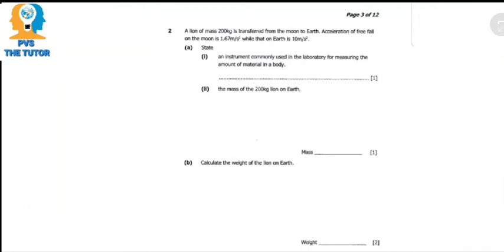Welcome to PVST Tutorial guys. Today I've got a question from a past paper. It says a lion of mass 200 kg is transferred from moon to earth. Acceleration due to gravity on the moon is 1.67 meters per second squared, while that on earth is 10 meters per second squared.